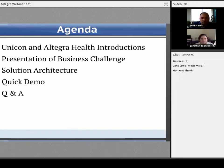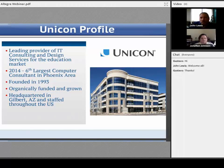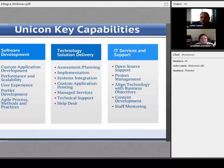My name is John Lewis. I'm the chief software architect here at UNICON and I'll be your host for today. UNICON is an IT consulting firm focused on the education market but expanding into a number of other areas. We are based in the Phoenix area, although we have consultants around North America. We were founded in 1993, so we've been around for over 21 years, and we've always been organically funded and grown.